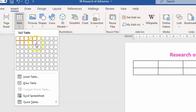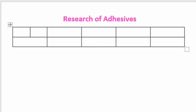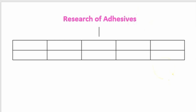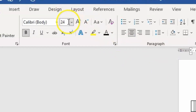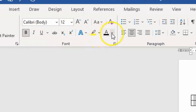It is important to go and select next to the end of your heading, then press Enter. Select the area beneath the Research of Adhesives heading as well as the table, and set the font to size 12 Calibri. From there, ensure that it's bolded and check to make sure that it is black text.